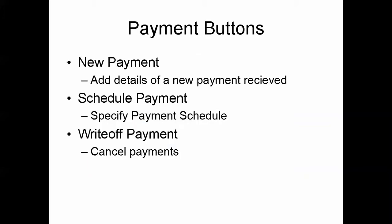The payment record also has a set of buttons available for us. For an opportunity where we want to add an additional payment for a donation, this can be done through the new payment button. If the household wants to make a regularly scheduled payment — for example, every month they want to make a payment of $500 — we can schedule a payment through the payment record. If for some reason the household decides not to make the donation, we have the option of cancelling payment by clicking on the write-off payment button.